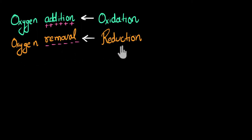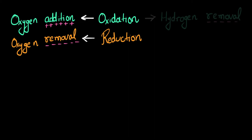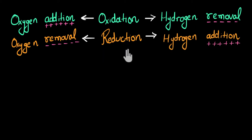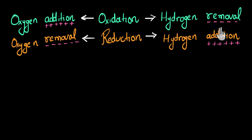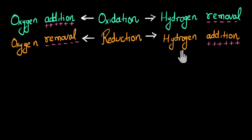We can also define oxidation and reduction in terms of hydrogen. Whenever hydrogen is removed, we call it an oxidation reaction, and whenever hydrogen is added, we call it a reduction reaction. You might be wondering why we are talking about hydrogen and why the effect of hydrogen is opposite to oxygen — in oxidation, oxygen needs to be added whereas hydrogen needs to be removed; in reduction, oxygen needs to be removed whereas hydrogen needs to be added. Don't worry, I will give you some insights about this towards the end of the video.